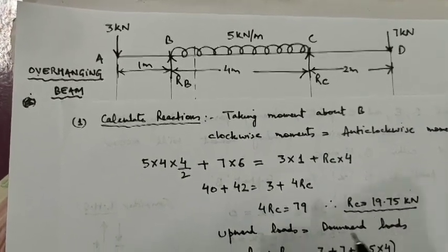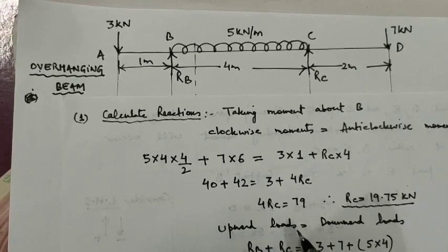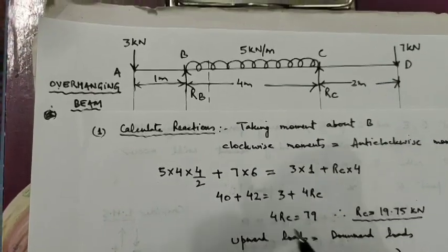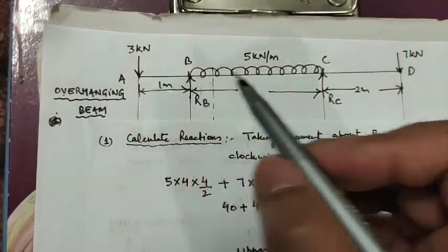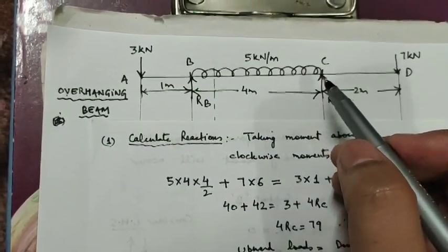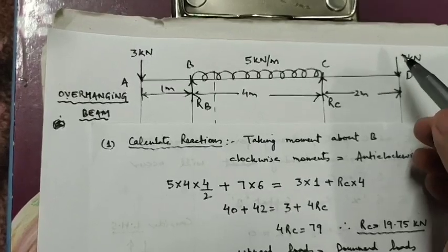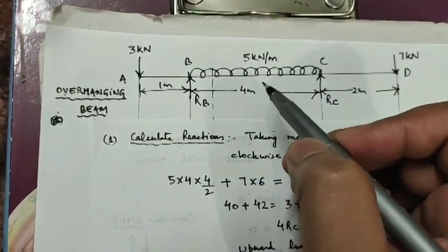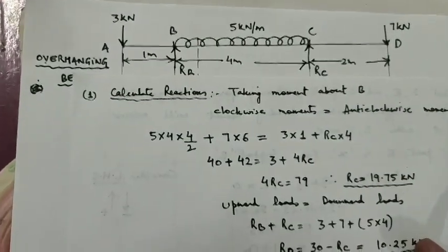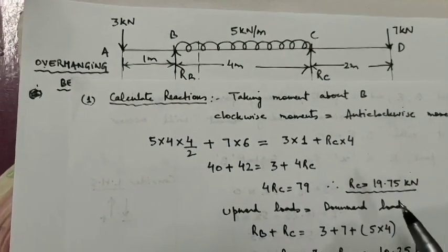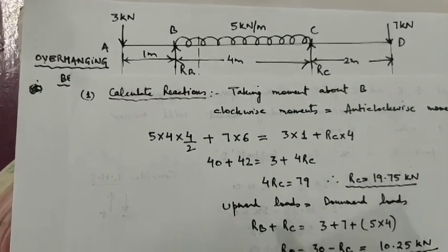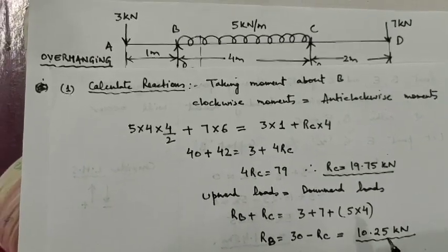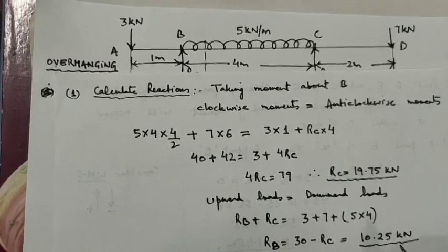The other equation of equilibrium states that all upward loads equal downward loads. The upward loads are RB and RC, while the downward loads are 7, 3, and 5 into 4. By equating these two and substituting the value of RC, we find RB equal to 10.25 kN.